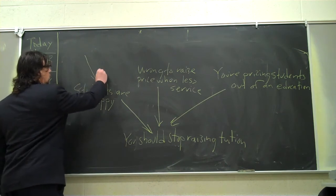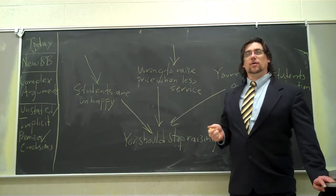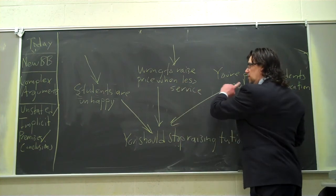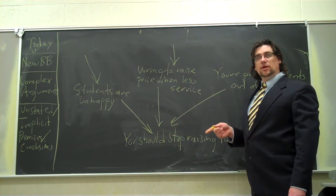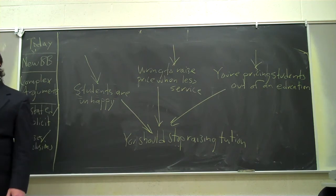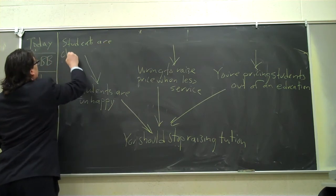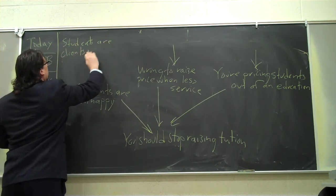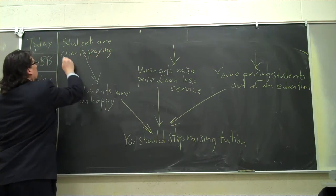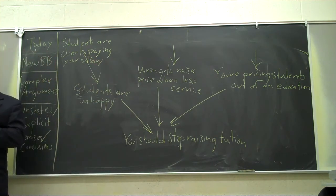Then you've got to figure out how you're going to support these points. Now you're dealing with a complex argument. These are premises, but they're also going to be conclusions in other arguments. So if students are unhappy, why should he care? Why is that important? Students are the client, paying your salary. And we might have to bring in some other premises as well. This is where we're going to get to unstated or implicit premises.